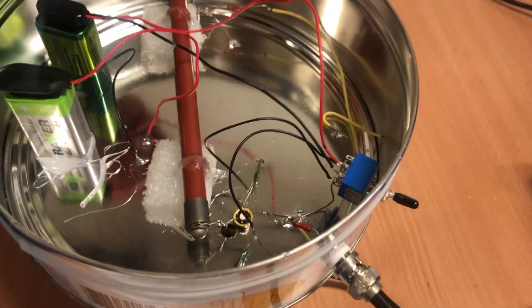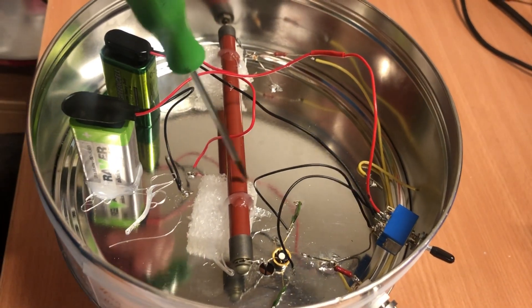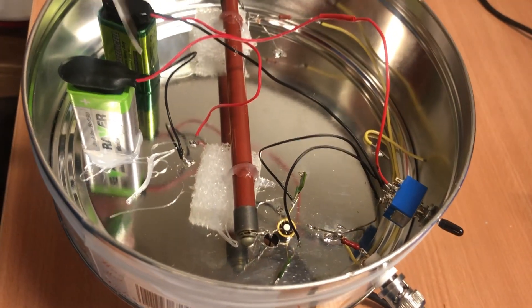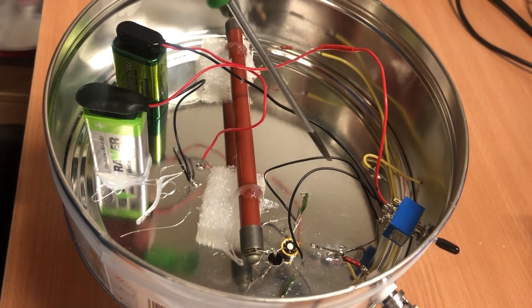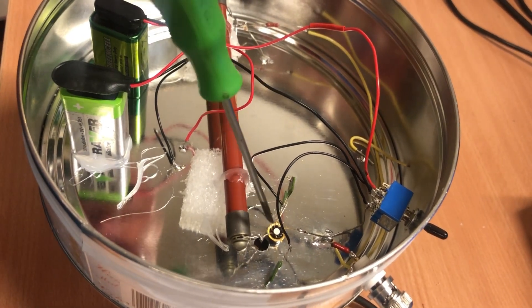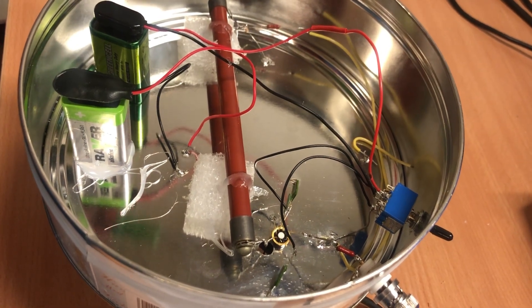In the box we see 3 gigaohm resistor, operational amplifier, two batteries supplying plus and minus voltage. And basically that's it. And here in the hole goes a central electrode.